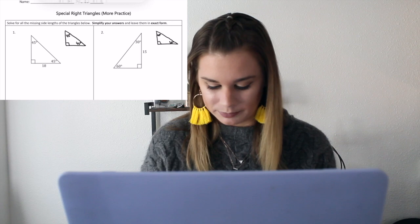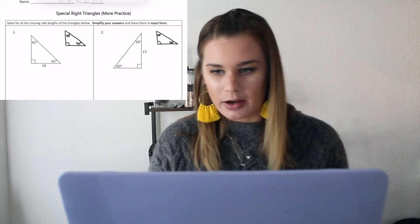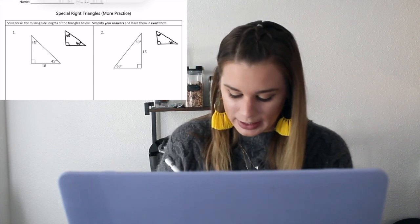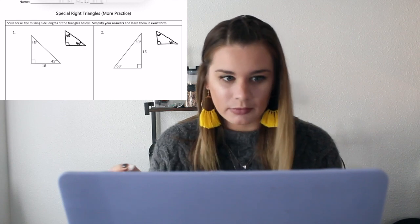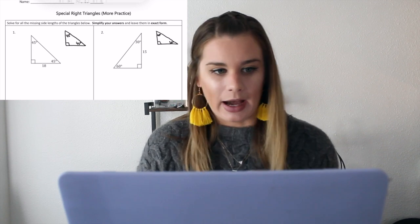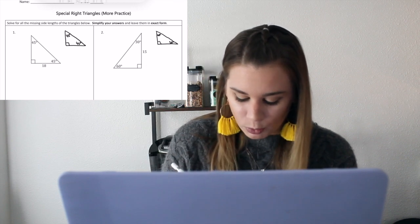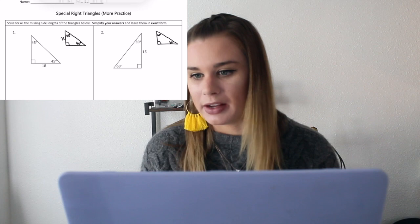I'm sending everyone back from their breakout rooms — they did four review problems from what we learned last class and now we're going to go over them together. Hi guys, welcome back! I'm going to share my screen and we'll go through these together. These were a little trickier than some of the problems we've done before. Special right triangles — we found some rules for these. Let's start at number one. This triangle right here is a 45-45-90.